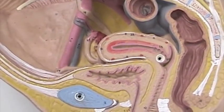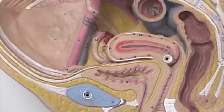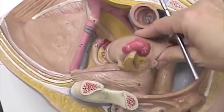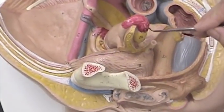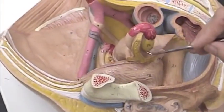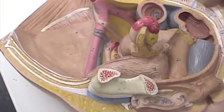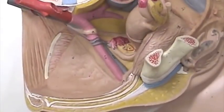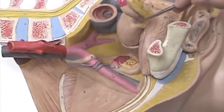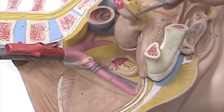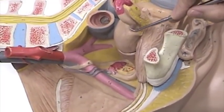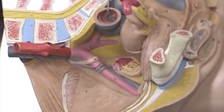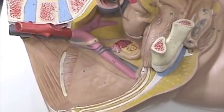We have the ovary — this yellow structure right here. We have the uterine tubes, sometimes called the fallopian tubes, here. The uterine tubes are attached to the uterus.